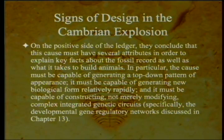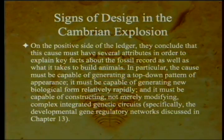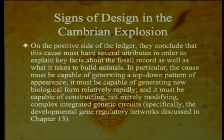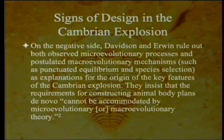Irwin and Davidson have assembled a clue sheet — a list of key evidences that must be explained — and have begun to sketch a profile of the cause behind the Cambrian explosion. On the positive side of the ledger, they conclude that this cause must have several attributes: it must be capable of generating a top-down pattern of appearance, capable of generating new biological forms relatively rapidly, and capable of constructing — not merely modifying — complex integrated genetic circuits, specifically the developmental gene regulatory networks discussed in Chapter 13.